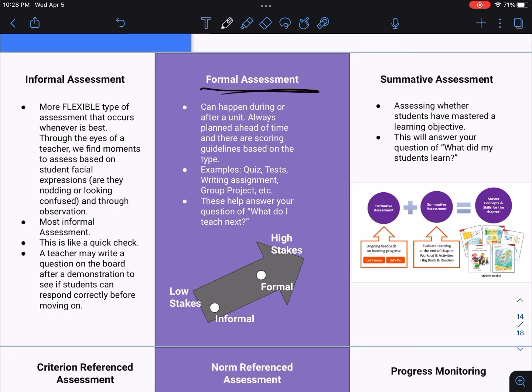Next, we're going to talk about the formal assessment. Now this can happen during or after a unit. It's always planned ahead of time, and there are scoring guidelines based on the type of assessment. So these would include things like quizzes, tests, a writing assignment, even a group project. And these kinds of assessments are going to help you answer what should I teach next, did the students really grasp the lesson, should I go back and reiterate some key points, or are we good as a class in order to move on.